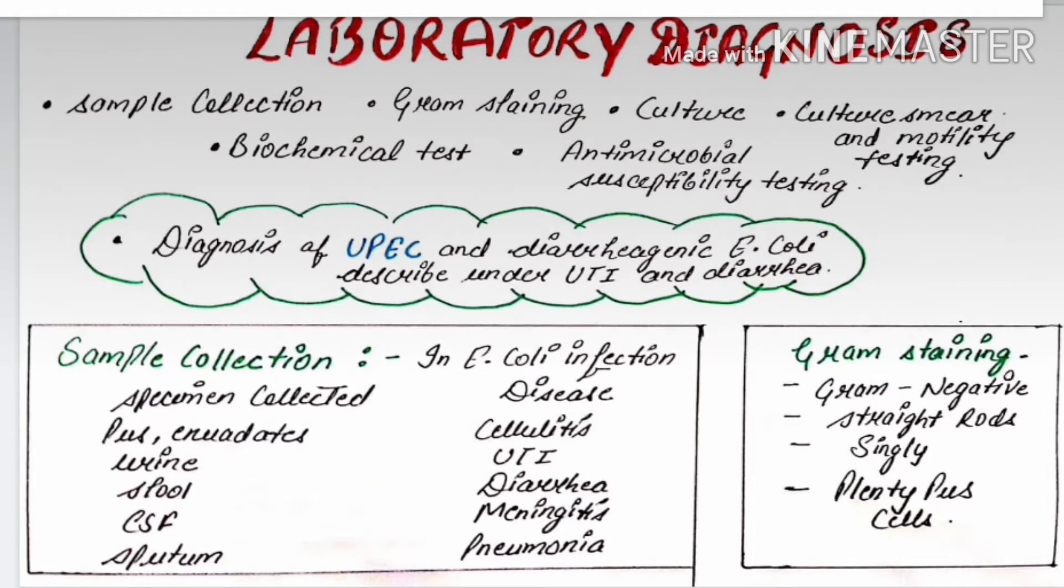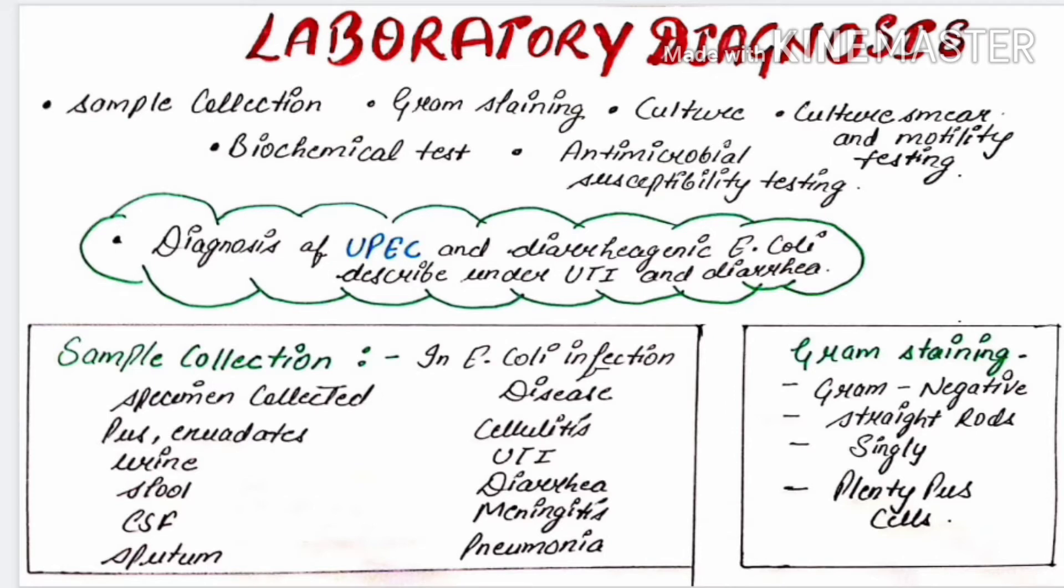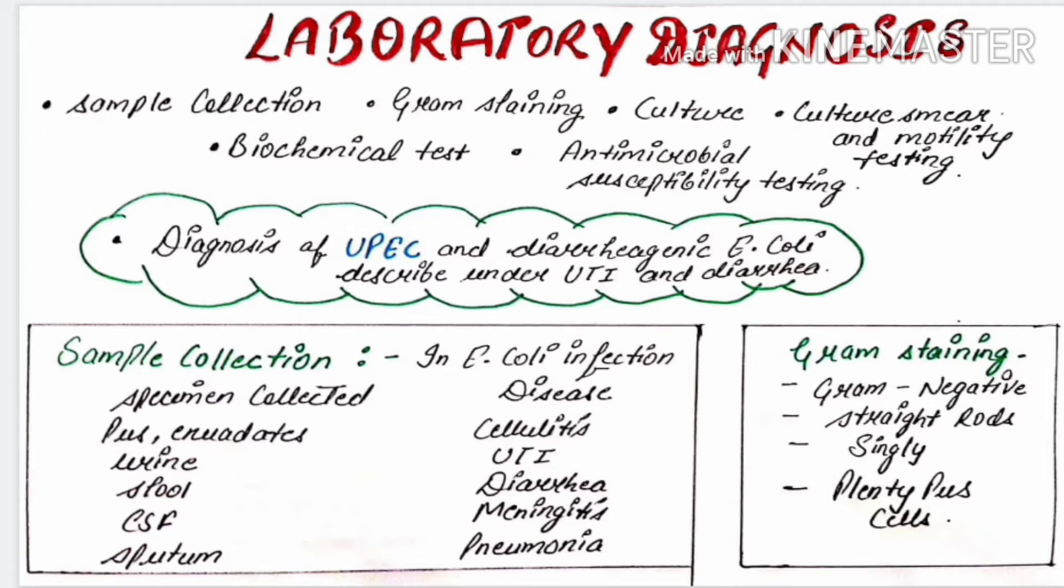First, we will go through sample collection. Sample is collected according to the disease, according to the infection. For example, if a person is suffering from UTI, then we can collect urine. If a person is suffering from cellulitis, then pus and exudates can be collected. If a person is suffering from diarrhea, then one can collect stool. If a person is suffering from meningitis or pneumonia, then we can collect CSF or sputum respectively.